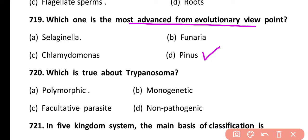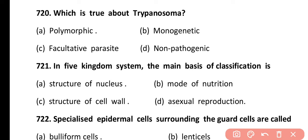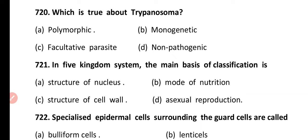Question 720. What is true about Trypanosoma? Polymorphic, monogenetic, facultative parasite, or non-pathogenic? Correct answer is option A. Trypanosoma is an obligate polymorphic digenetic parasite.